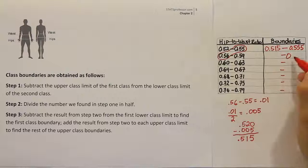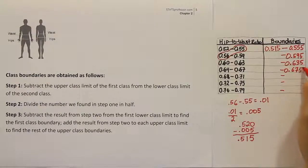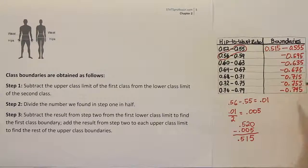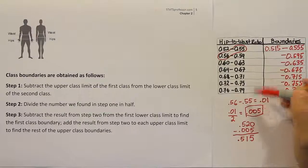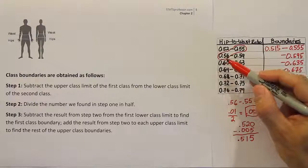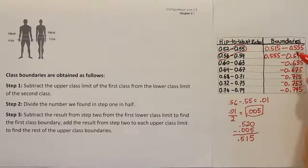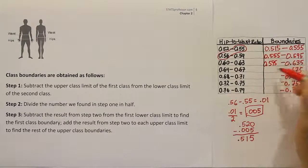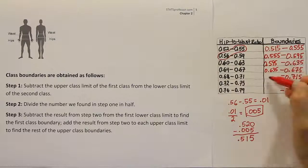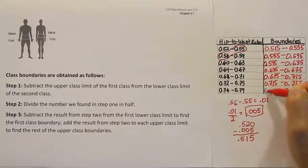Basically it's all of the upper class limit values with a .5 appended, giving us: 0.595, 0.635, 0.675, 0.715, 0.755, and lastly 0.795. For the lower class boundaries, we could subtract .005 from each lower class limit — for example, .56 minus .005 gives 0.555 — but you'll notice that's the same number on the diagonal. So these values repeat, giving us 0.555, 0.595, 0.635, 0.675, 0.715, and 0.755.